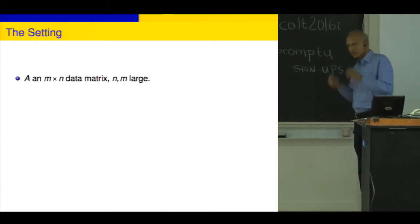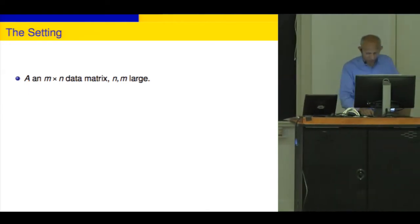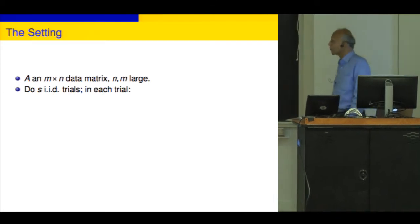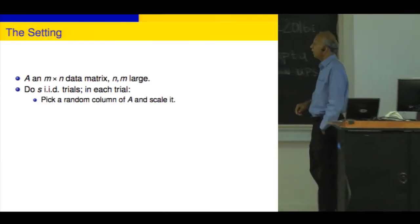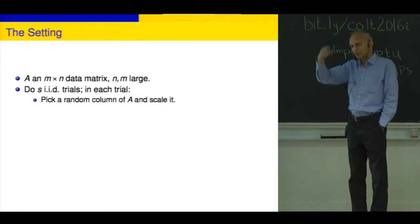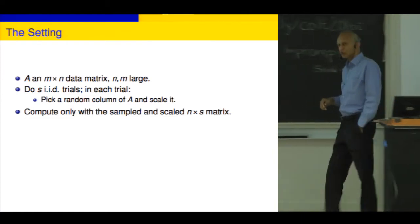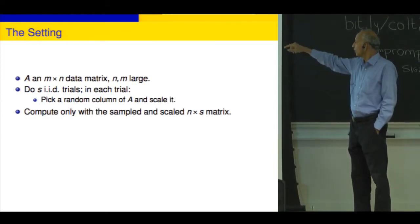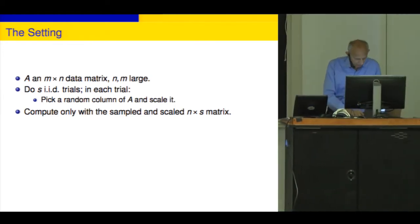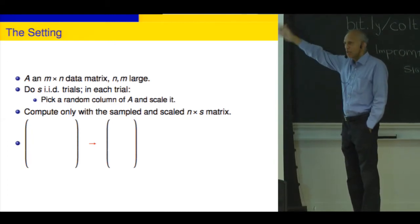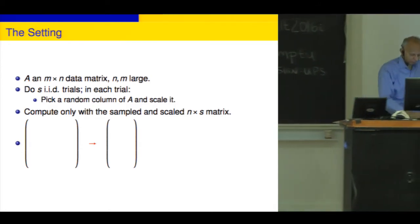Here is the setting. We have an M×N matrix where the dimensions are large. We want to do S independent identical trials. In each trial, we pick a random column of A. Having picked it, we are allowed to scale the column — multiply the whole column vector by a scalar. After that, we throw away the big matrix and only compute with the sampled S columns. S always stands for sample size. If sampling columns, we get a tall thin matrix on which we compute; sampling rows would also be useful.